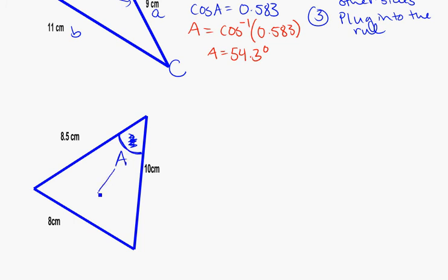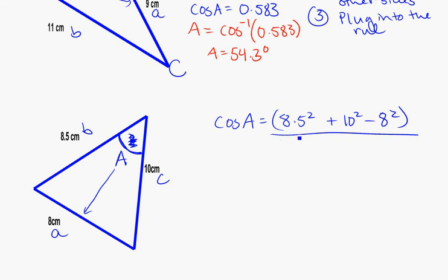So knowing that the angle there is A, that means the side opposite it is going to be little a. And then going around clockwise, I'll just call it B and C. Plugging into my formula, cosine of A is going to be equal to 8.5 squared plus 10 squared minus 8 squared. And I need to put brackets around that whole top. Divided by 2 times 8.5 times 10, putting the brackets again.